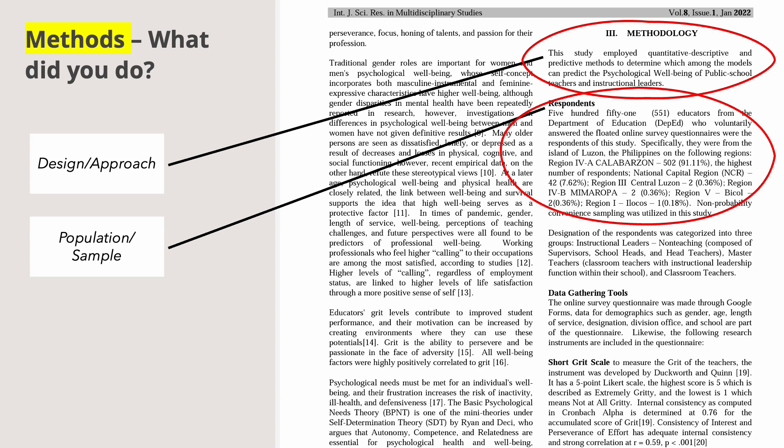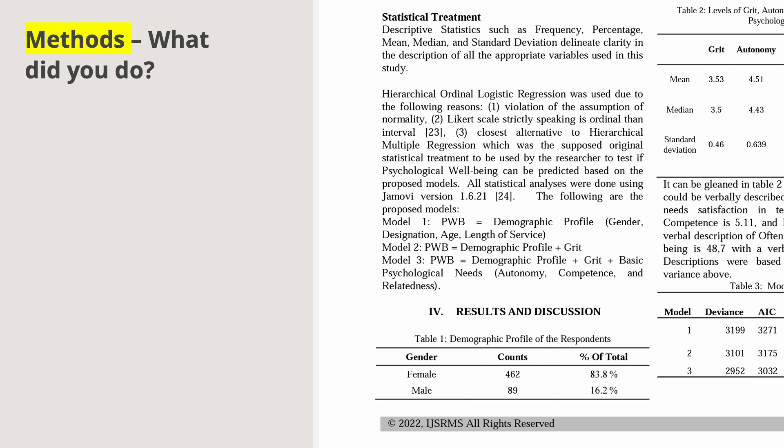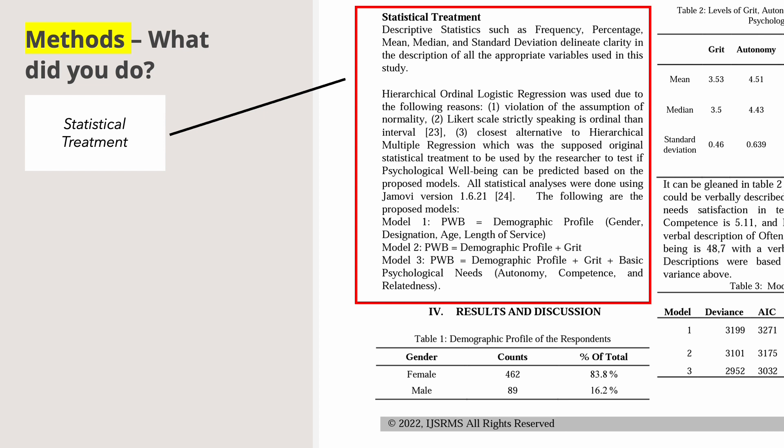The third element to remember is tools or instrument. Research instruments should be clearly discussed in the methods section. The name of the tool, description, validity, and reliability are necessary to state in the paper. If your study employed statistics, statistical treatment is also part of the methods section. In this example, descriptive statistics such as frequency, percentage, mean, median, and standard deviation were utilized, while for the inferential statistic, it's hierarchical ordinal logistic regression.